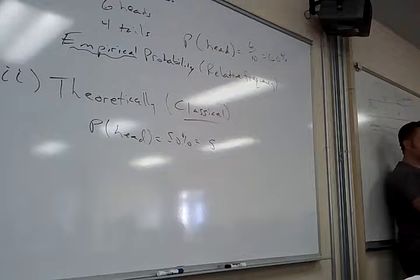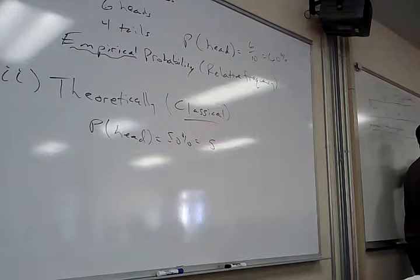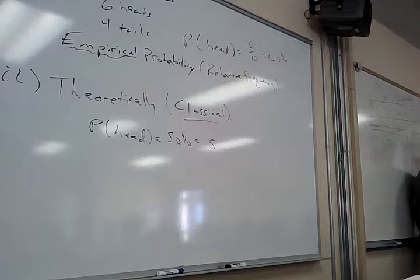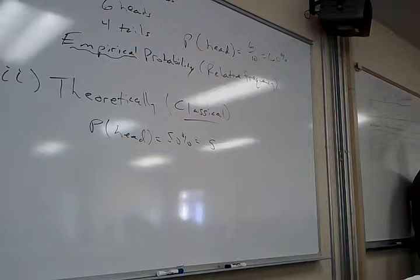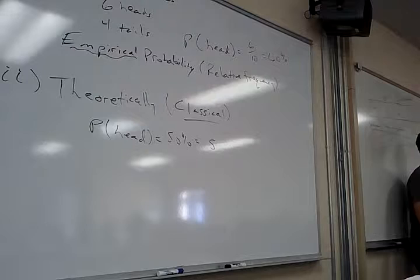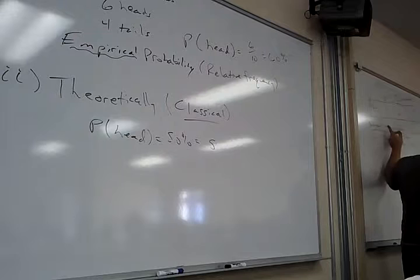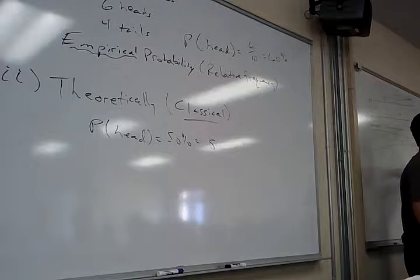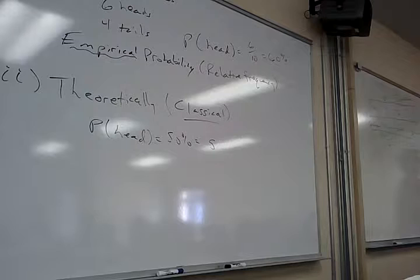So for woman OR not left-handed: 26 women plus 38 not left-handers, but I've counted the 22 not-left-handed women twice. So I subtract those 22, giving 26 plus 38 minus 22 = 42. Or smartly, do 26 plus 16 — the not left-handers I haven't counted yet, which are the men. This gives 42 out of 45, which is about 93%.